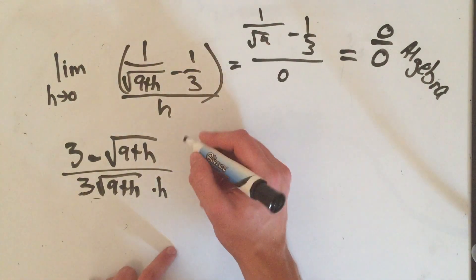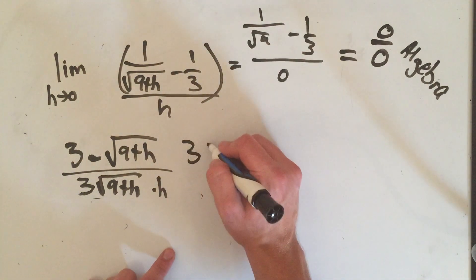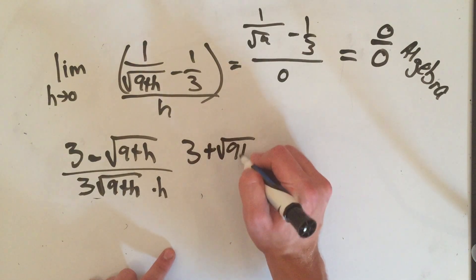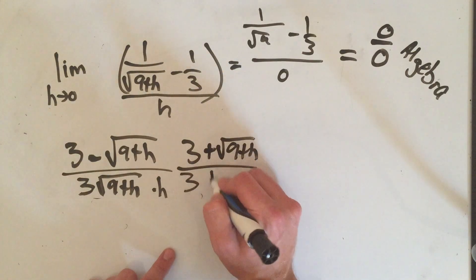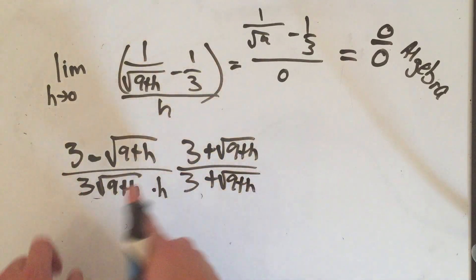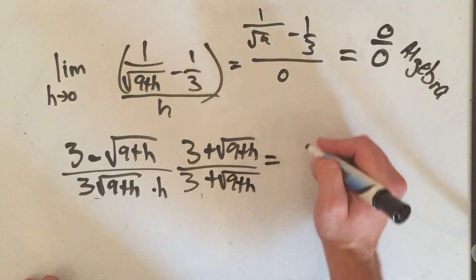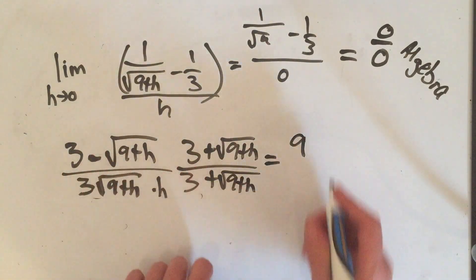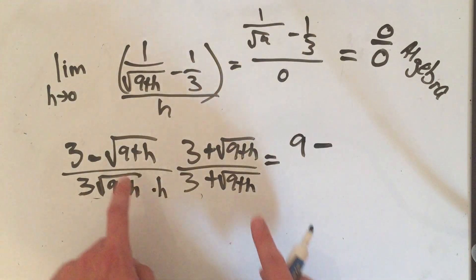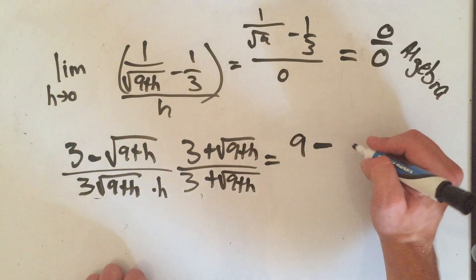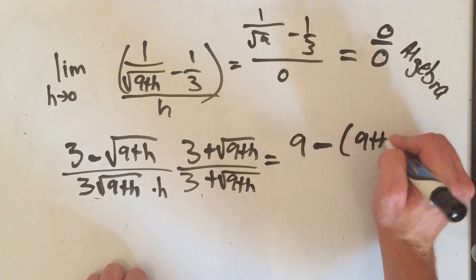Now let's multiply by the conjugate. So we're going to multiply by 3 plus square root of 9 plus h over 3 plus square root of 9 plus h. On the top I'm just going to get 3 times 3 is 9, minus times a plus is a minus, and square root of 9 plus h times square root of 9 plus h is 9 plus h.